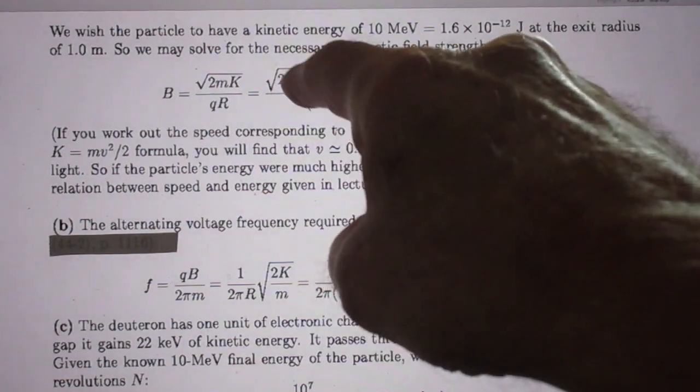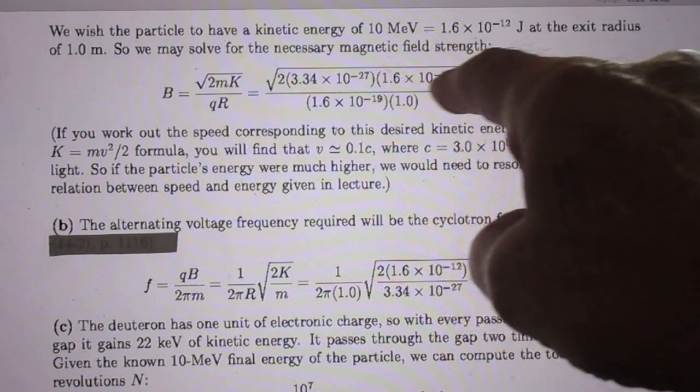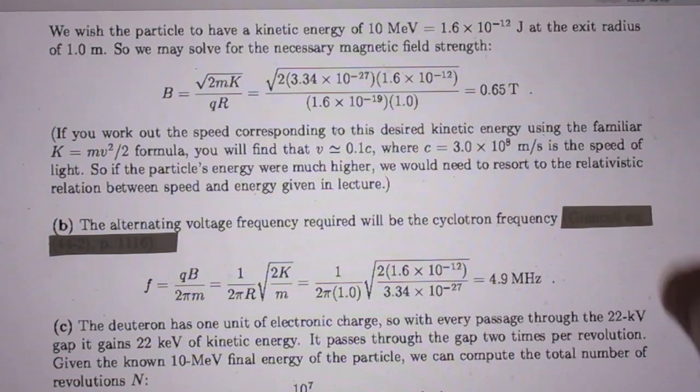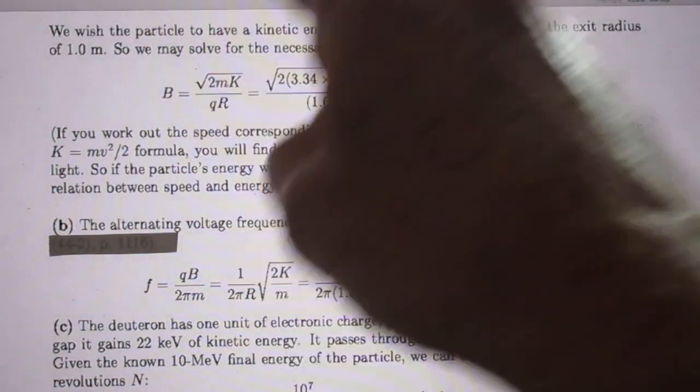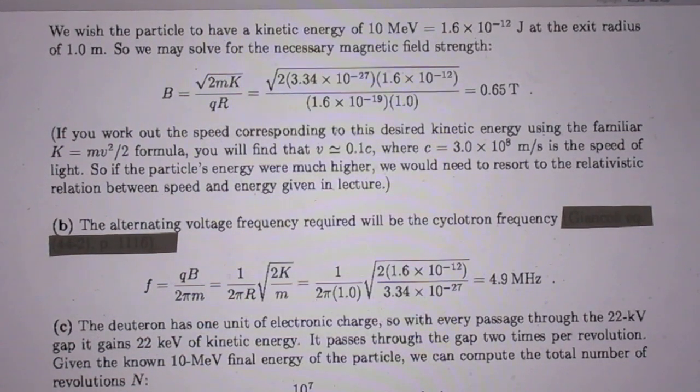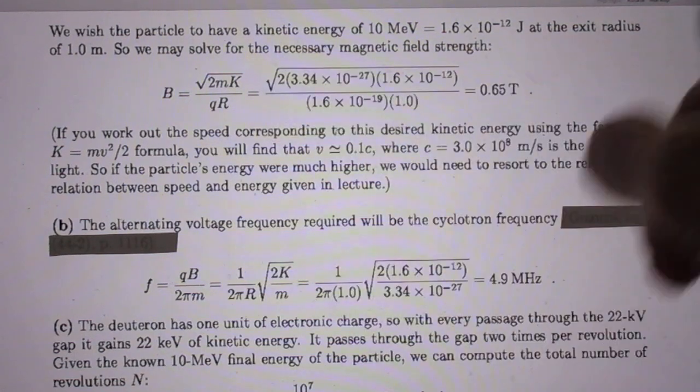So you plug in the numbers here and you find 0.65 Tesla. Here is the mass of the deuteron. I gave that in the problem. Here you see the 10 MeV, and here you see the mass Q of the deuteron. It has only one proton, and the radius is one meter.